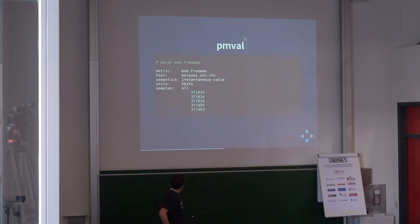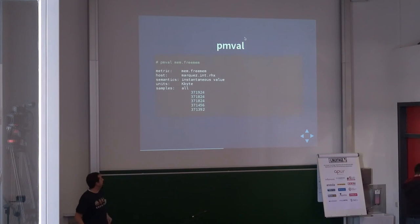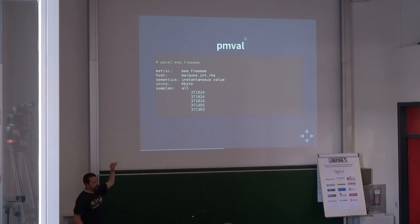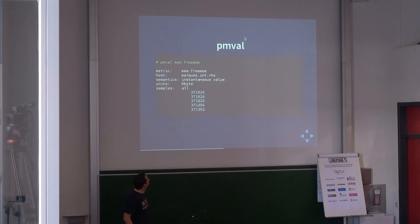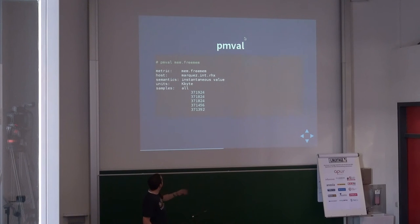PMVAL is another CLI — just another command, similar to PMinfo, except it prints the value over time. You can have a look at one or more metrics of a system.